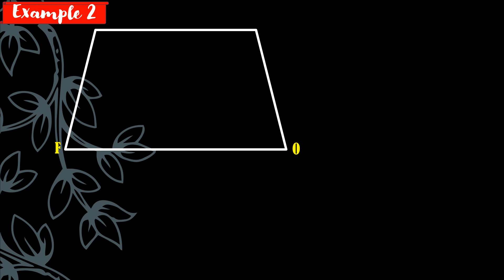Next example: this figure shows trapezoid FORM. The measure of angle F is 5X plus 15, angle O is 2X plus 6, angle R is 4Y, and angle M is 2X minus 10. Quadrilateral FORM is a trapezoid with bases MR and FO. Find the value of X, find the value of Y, then find each angle.